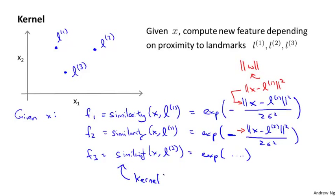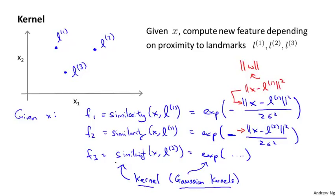What this similarity function is, mathematically, is called a kernel function. The specific kernel I'm using here is called a Gaussian kernel. In general, these different similarity functions are called kernels, and we can have different similarity functions. The specific example I'm giving here is called a Gaussian kernel. We'll see other examples. Sometimes instead of writing similarity between x and l, we write this as a kernel denoted lowercase k between x and one of my landmarks l i.